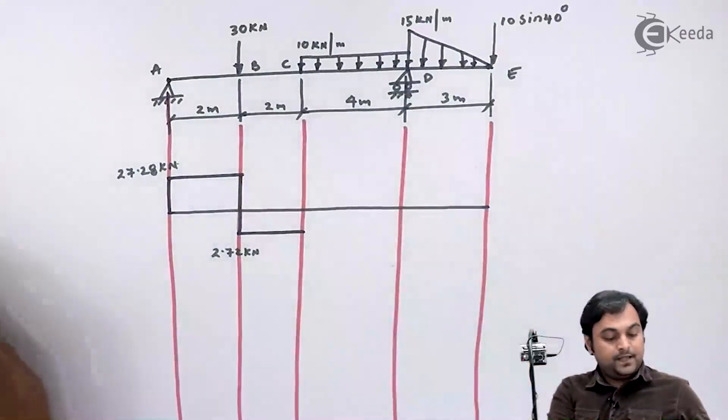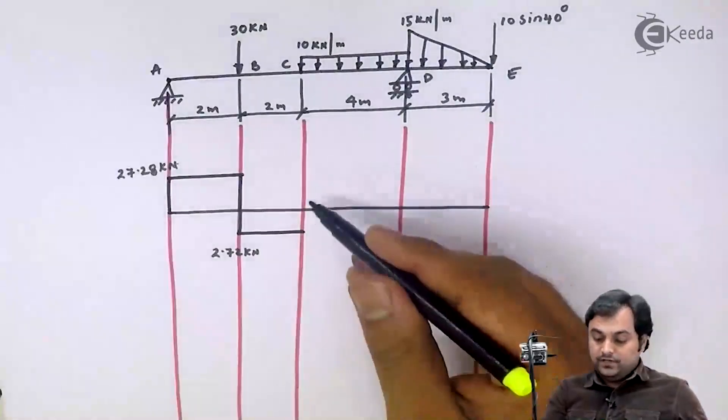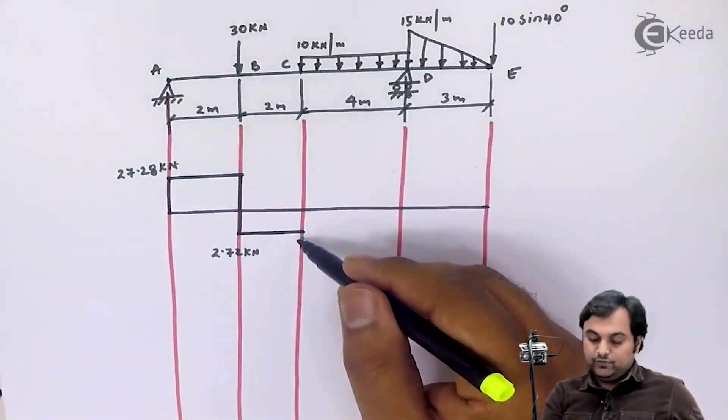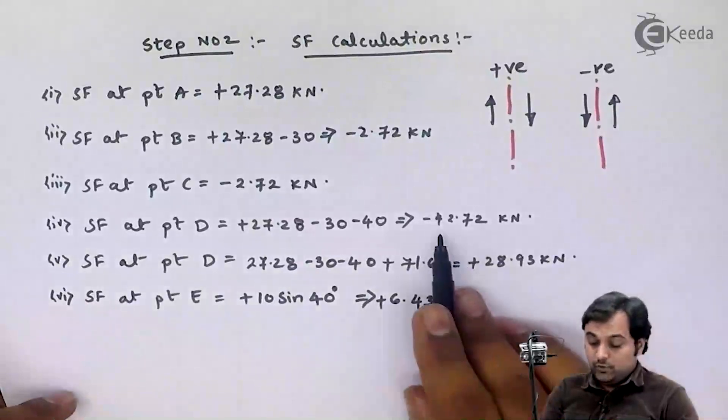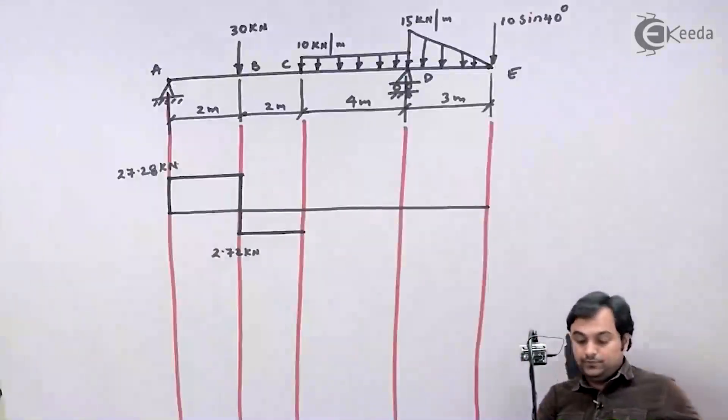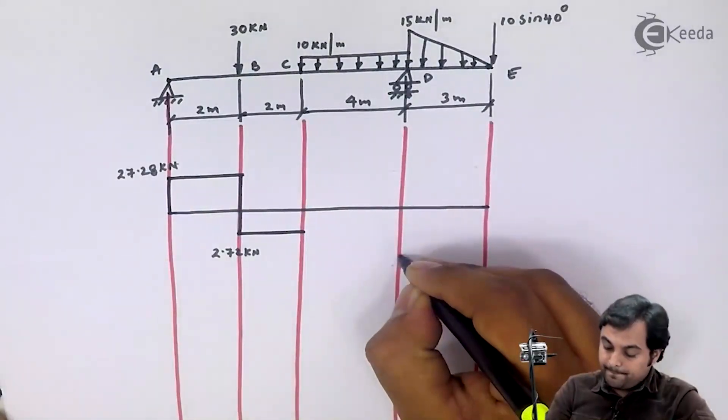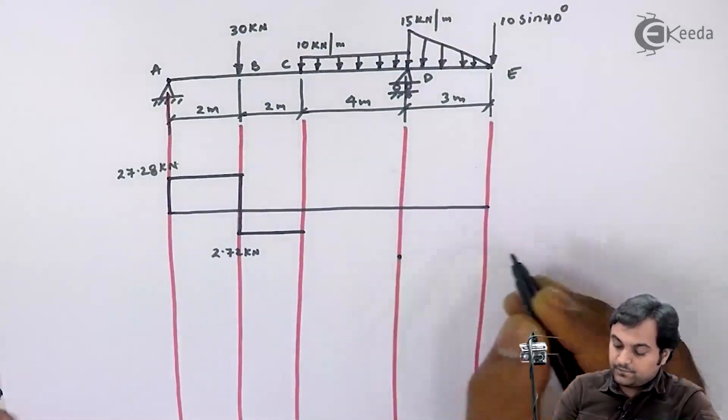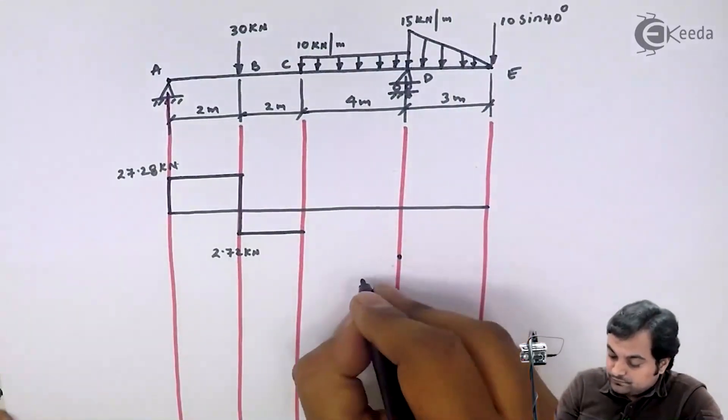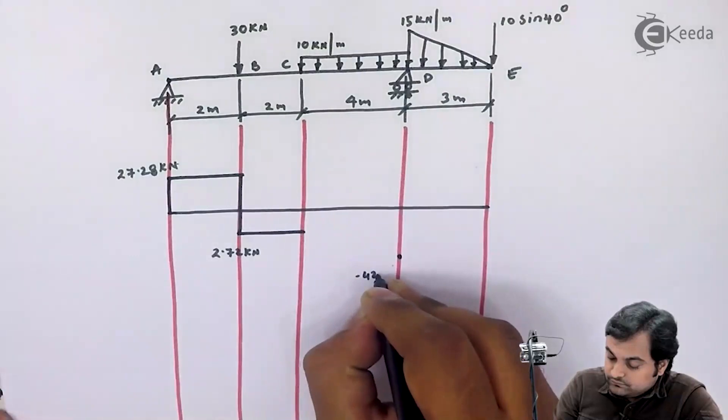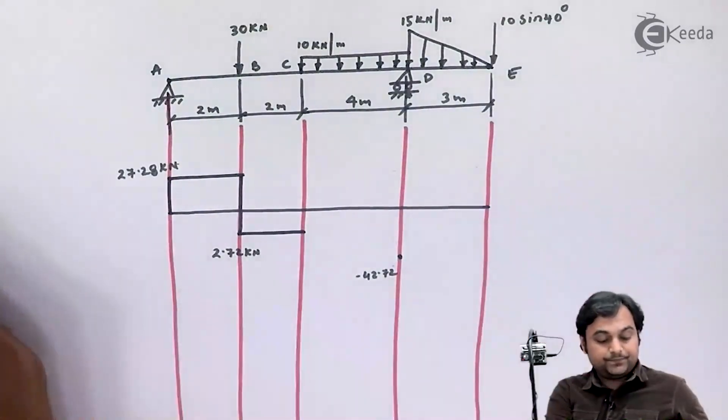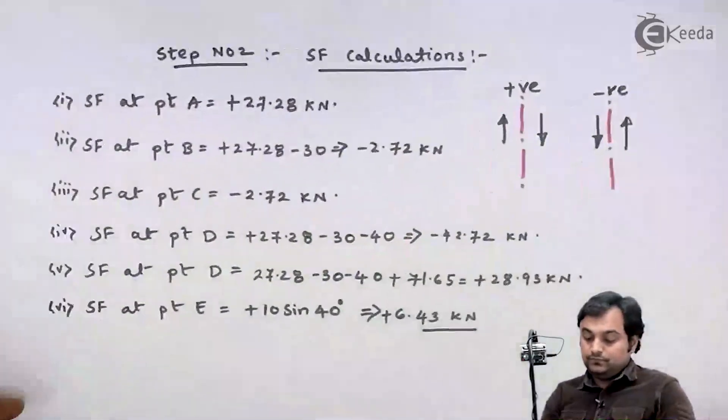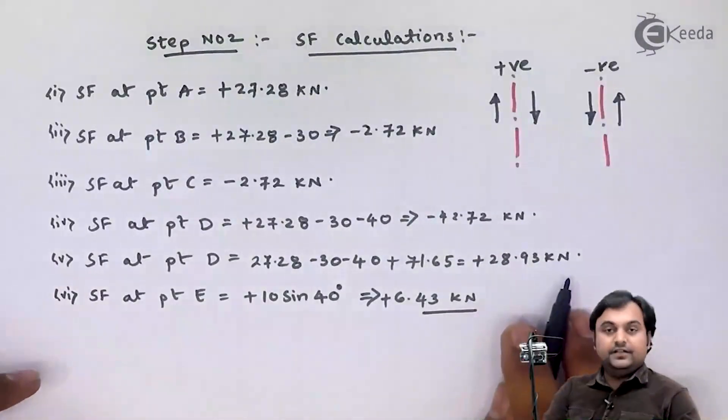At C the shear force is 2.72 which is negative. At D we are having 2 values. One is minus 42.72. Next the other value is plus 28.93.